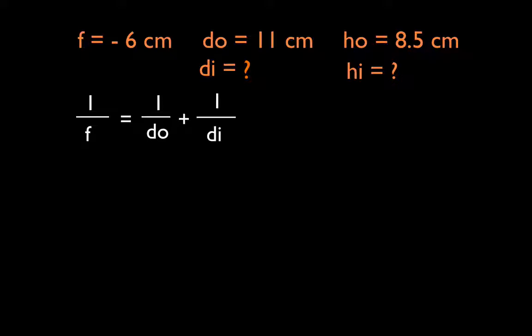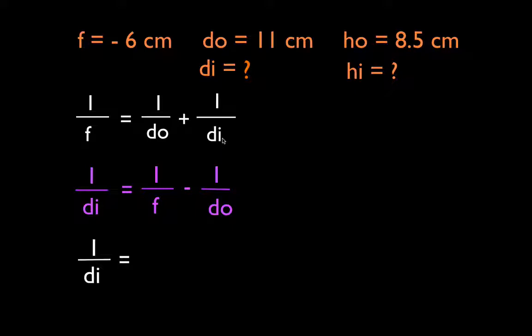Let's go through and do the problem. We're going to get the image distance first using the thin lens equation: 1 over F equals 1 over DO plus 1 over DI. We want to solve for the image distance, so we subtract 1 over DO from both sides, giving us 1 over DI equals 1 over F minus 1 over DO. We plug in 1 divided by negative 6 minus 1 over 11, because concave lenses have negative focal lengths and we must carry that negative through.